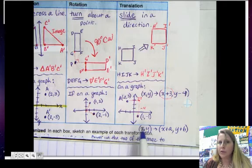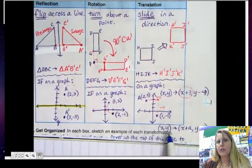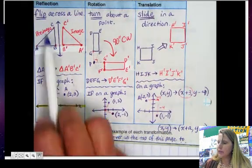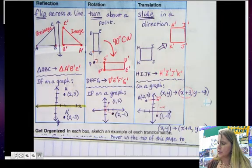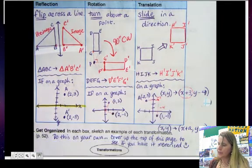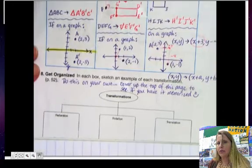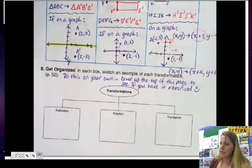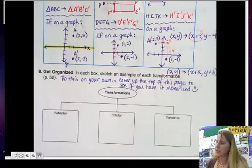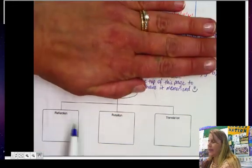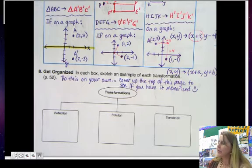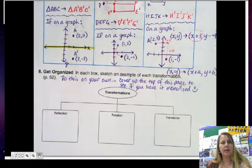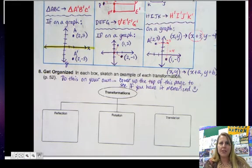So those are the three types of transformations. We have reflection, rotation, and translation. So cover up the top of the page. See if you can just do a really quick picture, sketch, showing each of these. So cover this up with your hand, and try and do these three on your own without looking. And that's the end of this lesson. Thanks for watching.